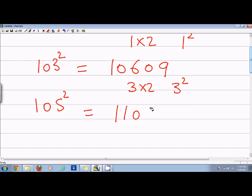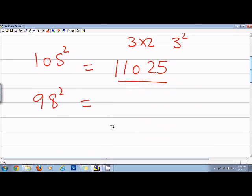Now if I have number less than 100, for example, 98, then in this case, our x, so it is 2 less than 100. So that will be minus 2 into 2. So that will be minus 4. So 100 minus 4 is 96 and then minus 2 square is 4. So 9604.